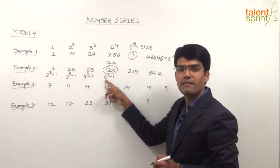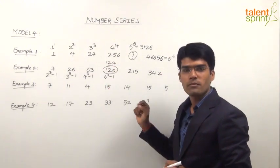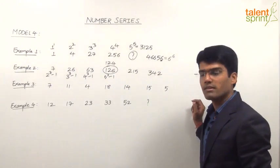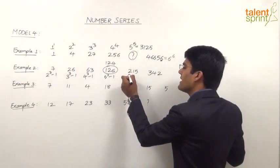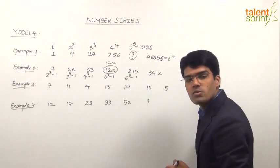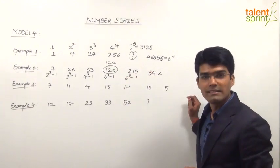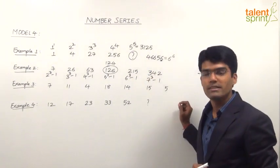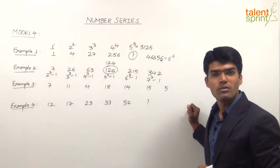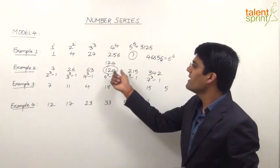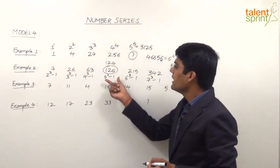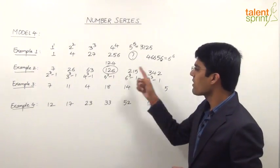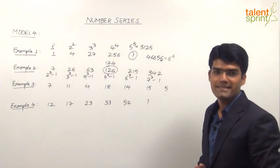Let us go ahead accordingly and see if the remaining two numbers are correct or not. If this is 5 cube minus 1, next one should be 6 cube minus 1 that is 216 minus 1 which is 215, so it is correct. Next one has to be 7 cube minus 1. 7 cube is 343 minus 1 is 342. So we can say that 126 is the wrong number. It should be 5 cube minus 1 which is equal to 124.